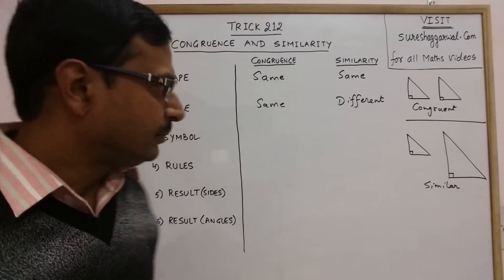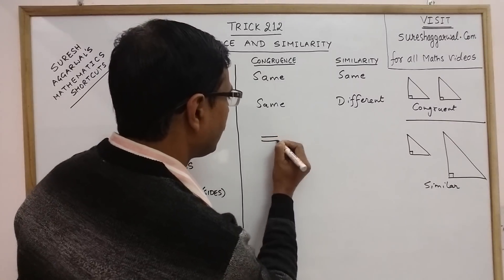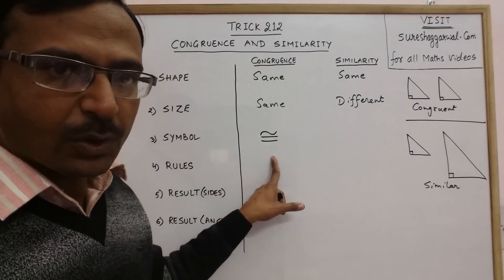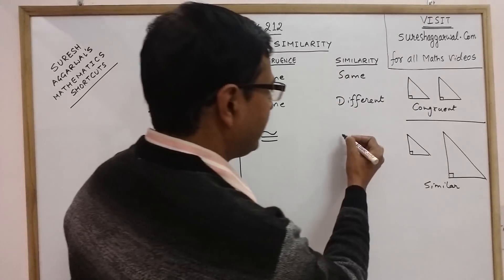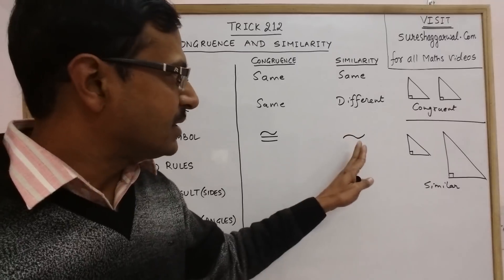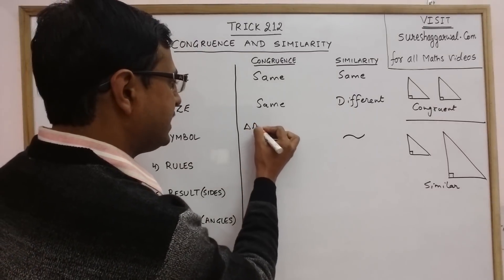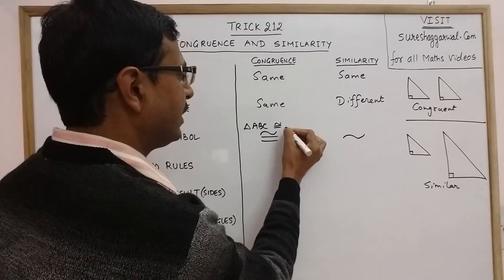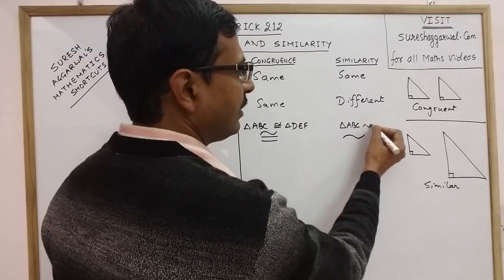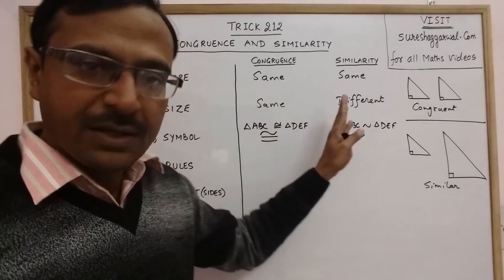Now see the symbol — the representation of congruence. When we represent congruence, we put an equal-to sign combined with a similarity sign. This combined symbol is the symbol for congruence. But in similarity, we just put the similar sign, that is the wave, and the equal-to sign is non-existent in similarity. So if we write triangle ABC is congruent to triangle DEF, we use the congruence symbol, but if we write similarity, then triangle ABC is similar to triangle DEF using only the wave symbol.